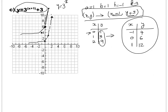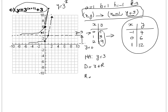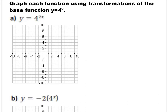The graph approaches the line y = 3 but never touches it, because the asymptote y = 0 has been shifted up three units. So the horizontal asymptote is now y = 3. The domain stays x ∈ ℝ, and the range is y ∈ ℝ with y > 3.